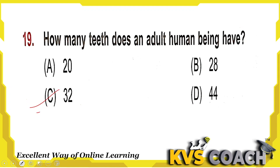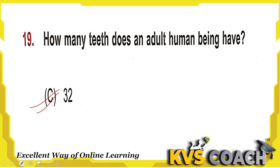Next: how many teeth does an adult human being have? An adult human being has 32 teeth. Option C is the right answer.